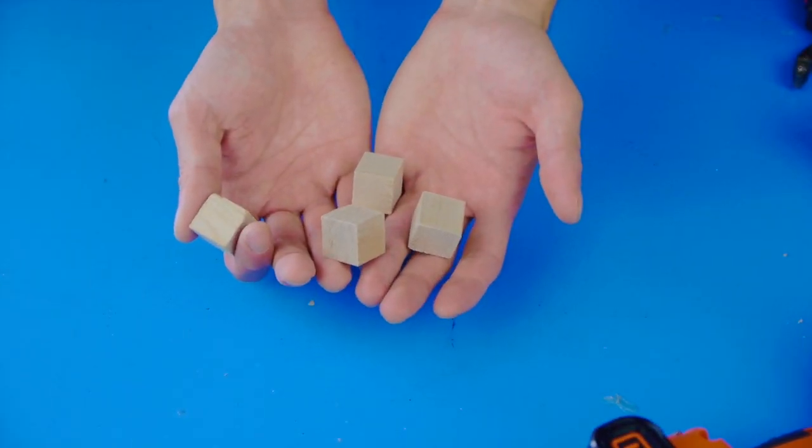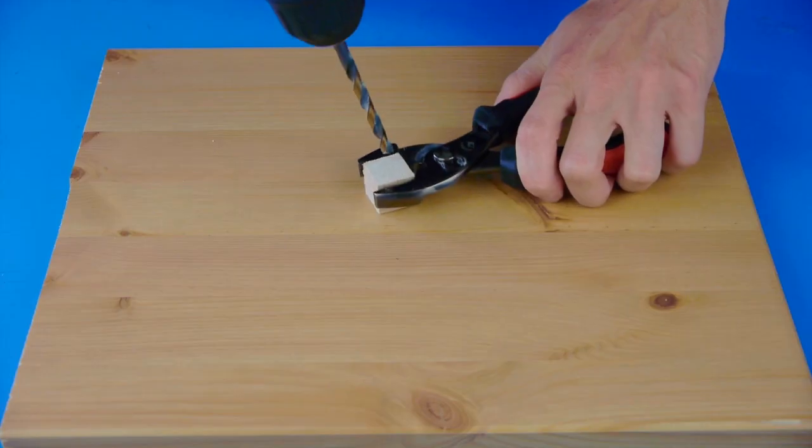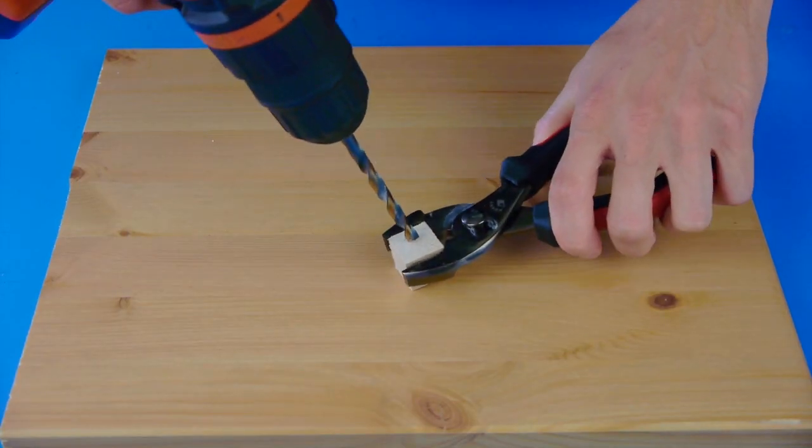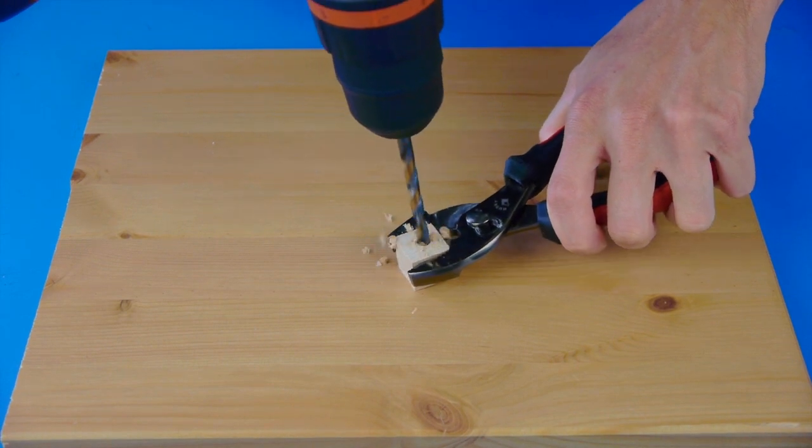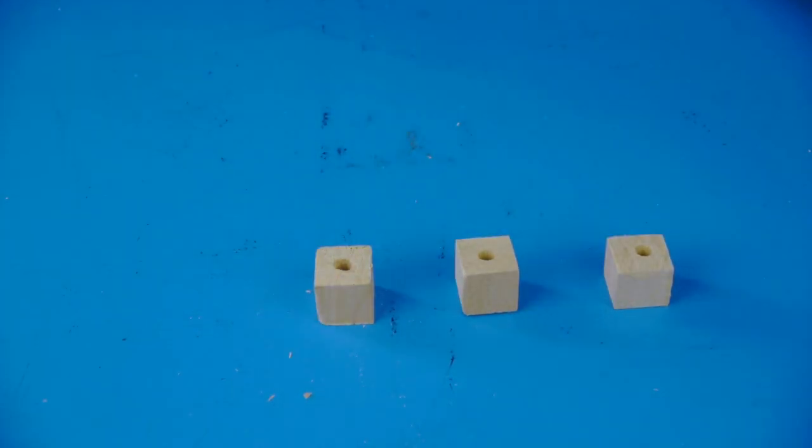Cut four cubes from the square dowel with the saw, and then with a pair of pliers, hold the cube and drill a hole that's slightly larger than a quarter of an inch. Drill holes like this into all four cubes.